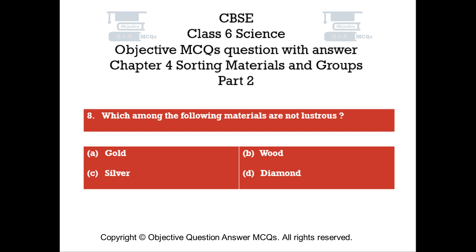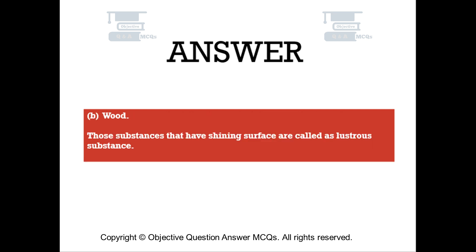Question number 8. Which among the following materials are not lustrous? Option A: Gold. Option B: Wood. Option C: Silver. Option D: Diamond. The right answer is Option B — Wood. Those substances that have a shining surface are called lustrous substances.